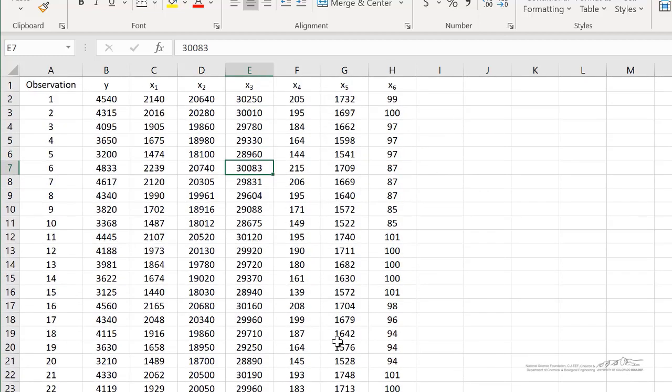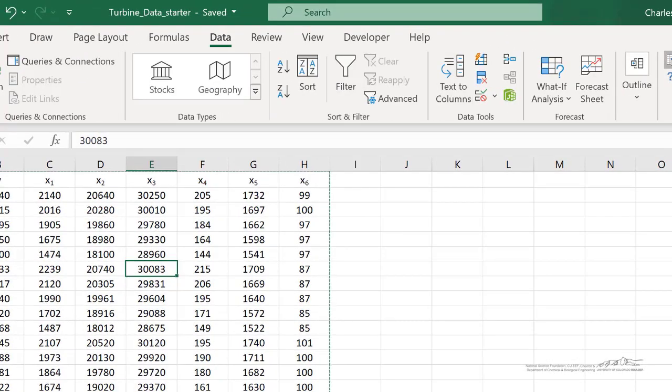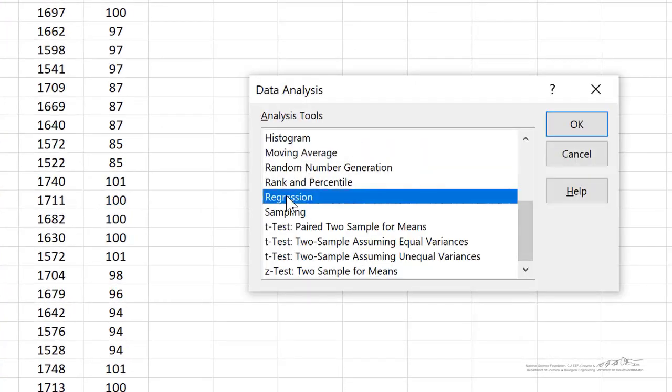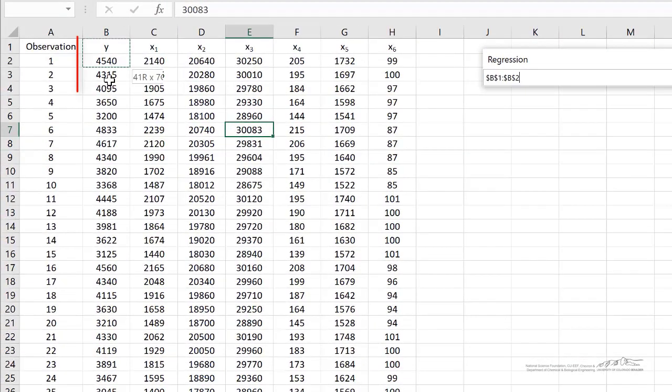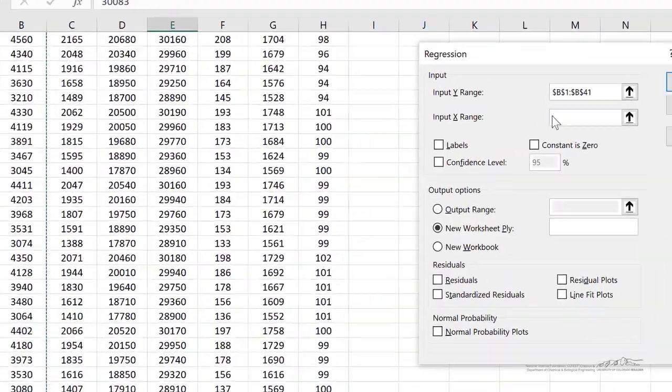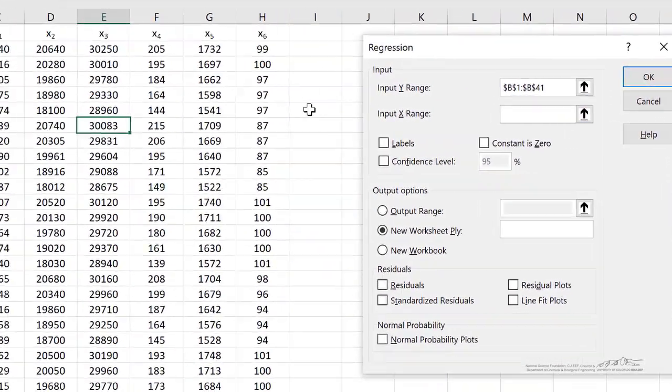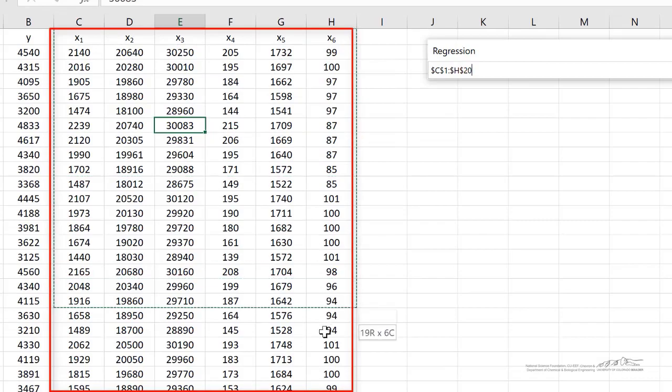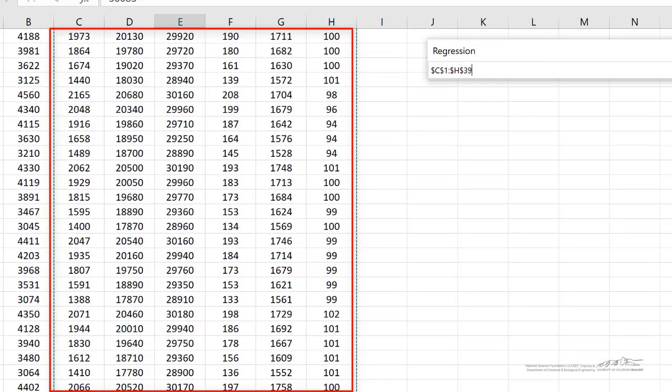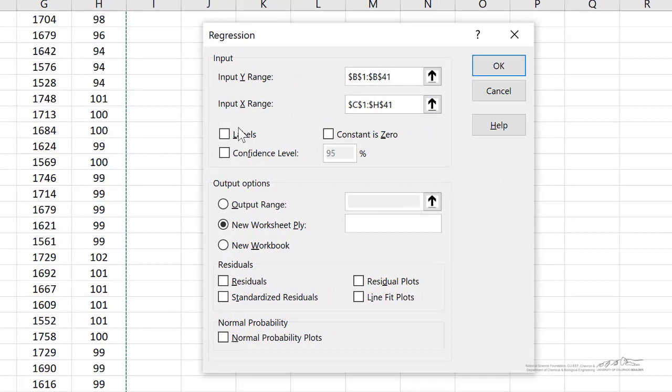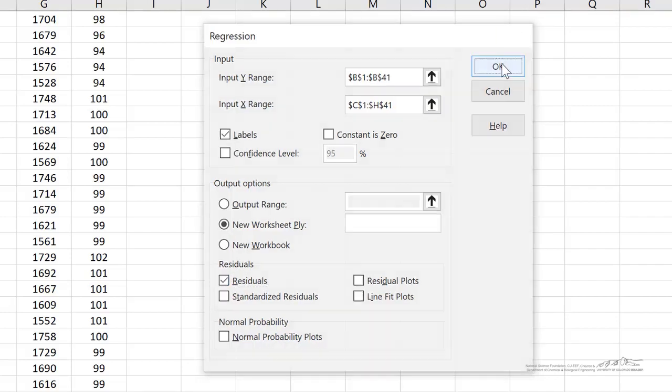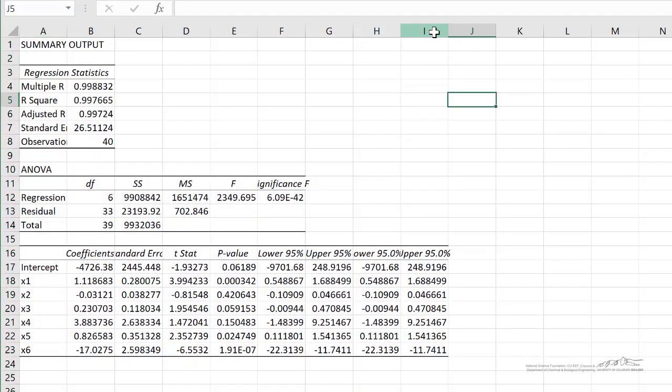The first thing we're going to do is we're going to create a full regression model. To create a full regression model, we've already got our data here. I can simply go up to the data analysis tool, regression. And my y input range is simply our y values. The x input range, this is going to be our full model. So I'm selecting all six of those columns, including the headers. Because I've selected headers, I'm going to click labels. I'm going to put this in a new worksheet, and I'm also going to select residuals. And then I can go ahead and click OK. It churns through. It creates our model.